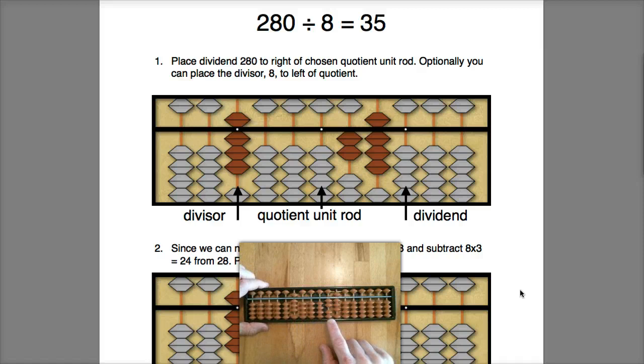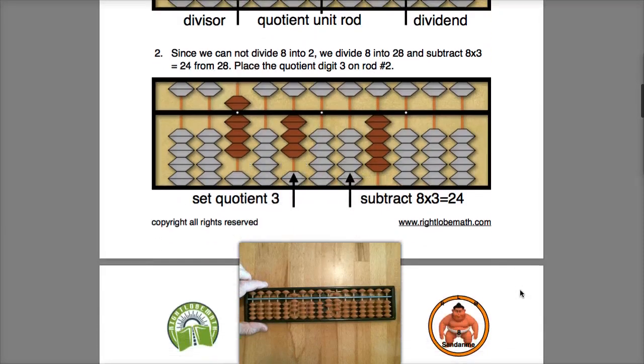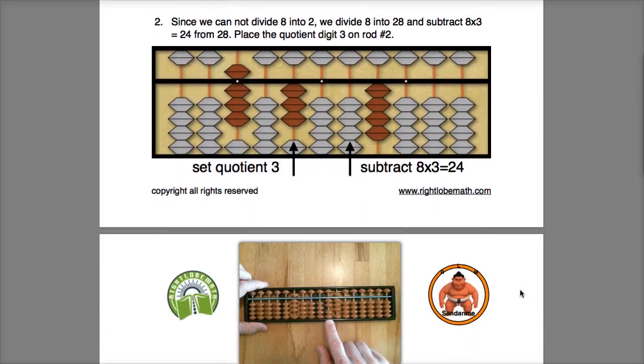Okay, since I have three digits in my dividend, I count 1, 2, 3 on my quotient, so this is my starting rod of my quotient. But if we compare the divisor to the first dividend digit 2, so 8 is larger than 2, so I can't divide 8 into 2. So I'll move one rod right and divide 8 into 28, and I will move one rod right as well on the quotient so I will place my first quotient digit on the second rod.